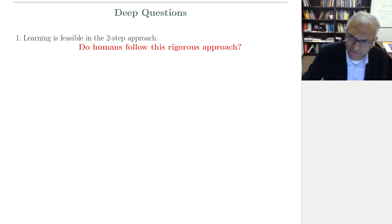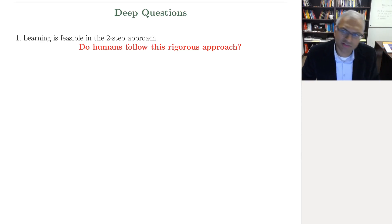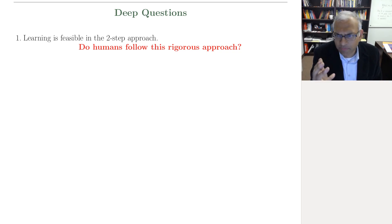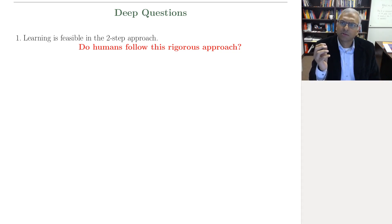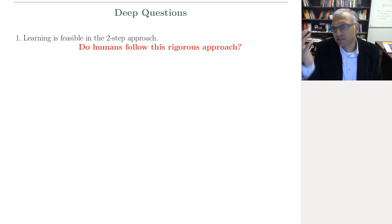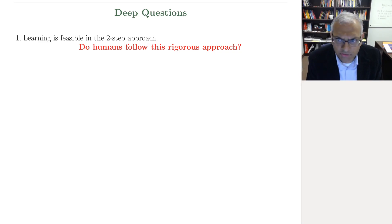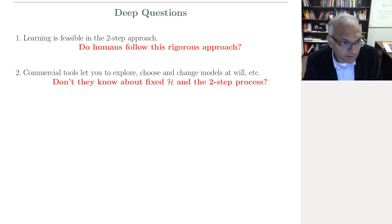We're going to look at five questions. The first is: we formulated learning in this two-step process to make it feasible. Well, humans — the greatest learners on the planet — do they follow such a rigorous two-step approach? It doesn't seem like they do.